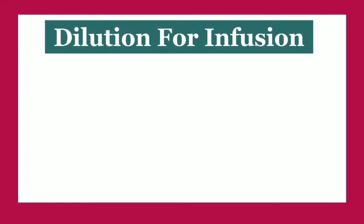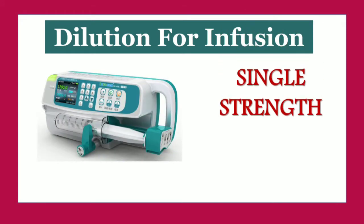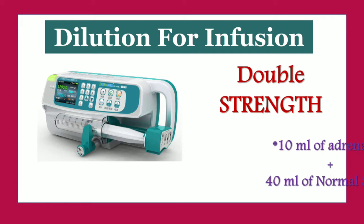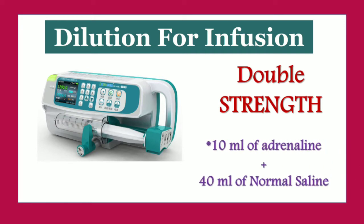What is the dilution strength for infusion? In case of single strength, 5 ml of Adrenaline is added to 45 ml of normal saline, and it may vary according to hospital policies. In case of double strength, 10 ml of Adrenaline plus 40 ml of normal saline is added for infusion.